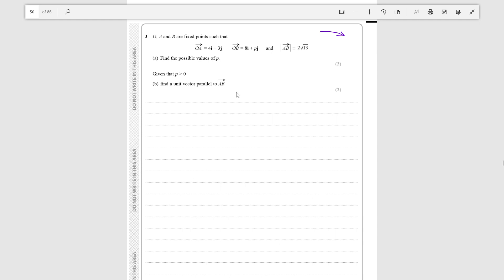Hello guys, today we're going to be doing this vectors question from paper 2 of the sample assessment material. Let's look at it: OA and B are fixed points such that OA is 4i plus 3j, OB is 8i plus pj, and AB is 2 root 13. First we need to find the possible values of p.